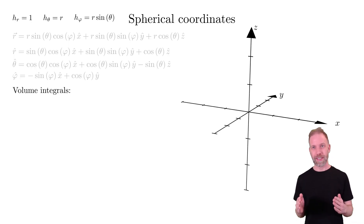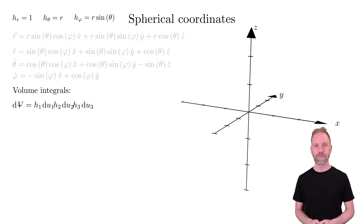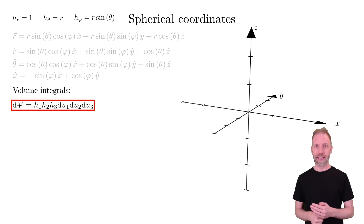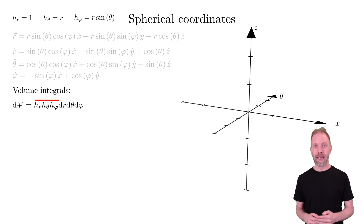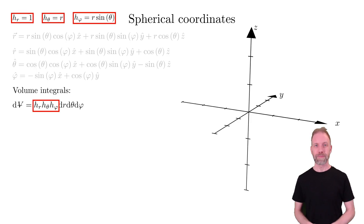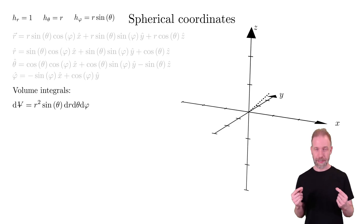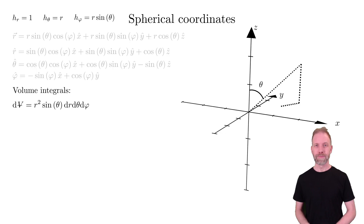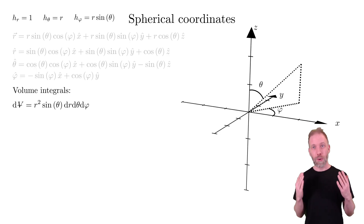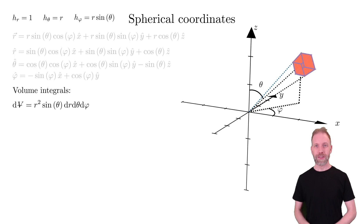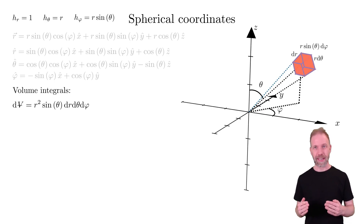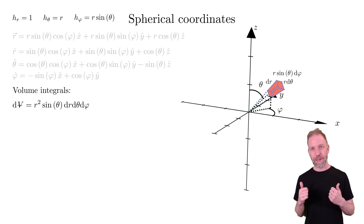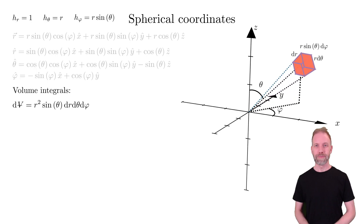Finally, we have volume integrals in spherical coordinates. The general volume element can be written using r as coordinate one, theta as two, and phi as three, inserting the scaling factors. Visualizing this volume element: we make small steps in all directions. The radial step length is dr, the theta-hat step length is r d-theta, and the phi-hat step length is r sin(theta) d-phi. We can illustrate the radial and theta dependence of the element.